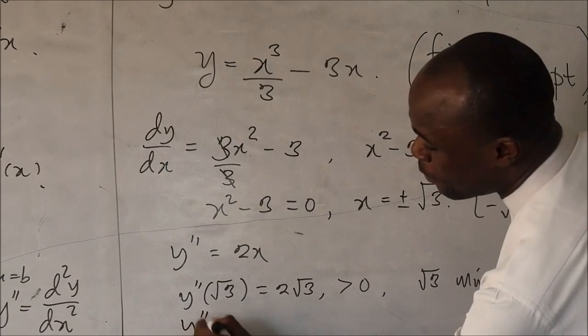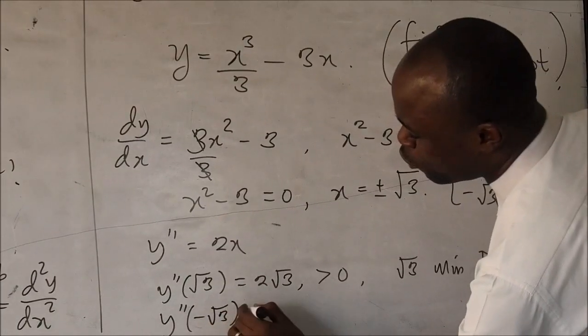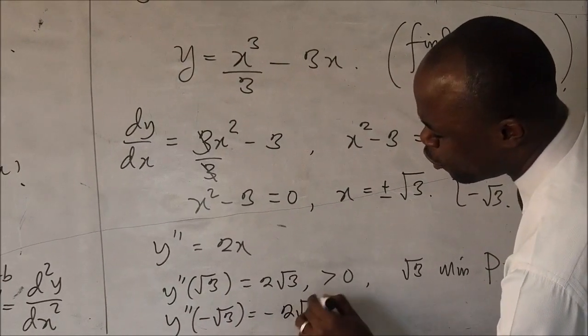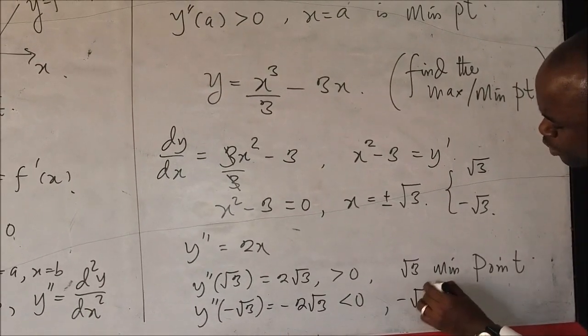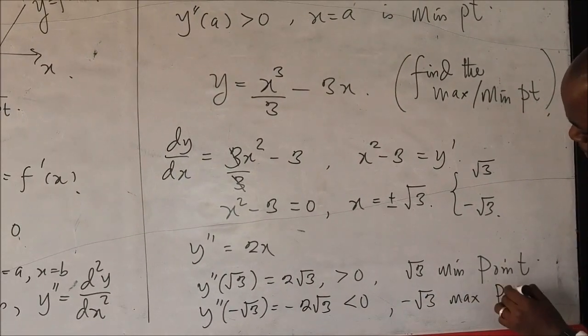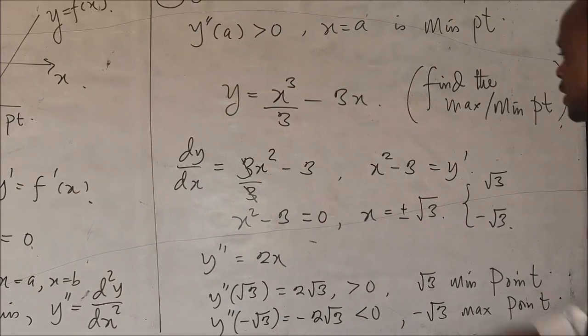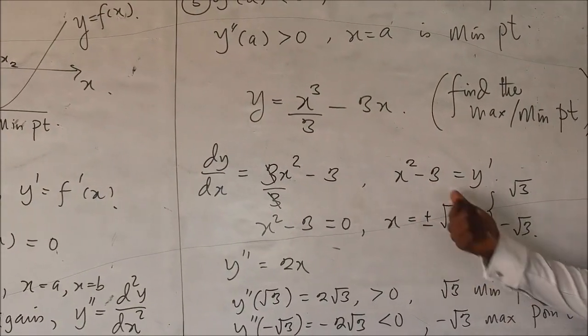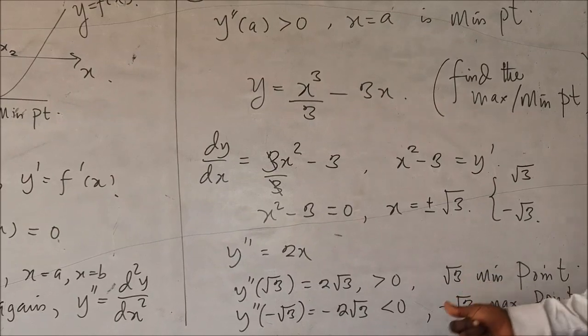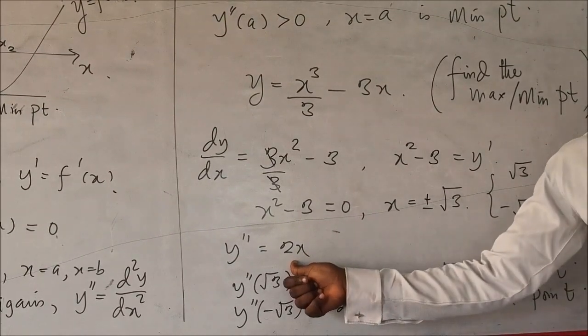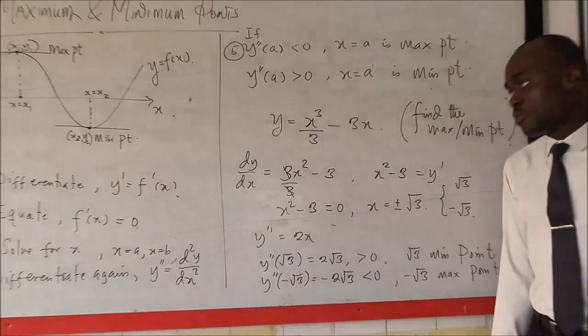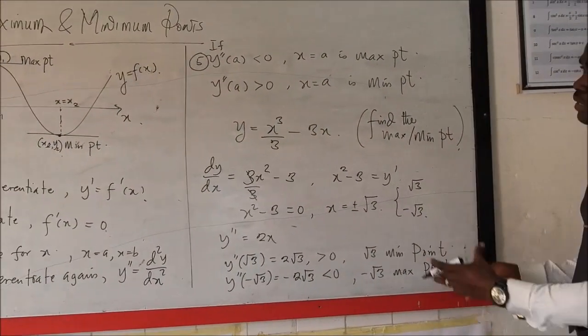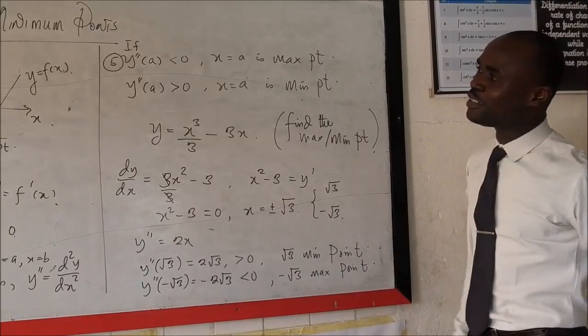Finally, y prime prime of minus root three is going to give us minus two root three and that is less than zero and that shows that minus root three is maximum point. You can also equate this to zero and find the point of inflection, which is going to be zero also. So, this is just a simple way you can find the minimum point of a function.